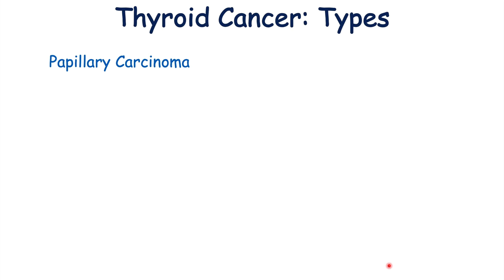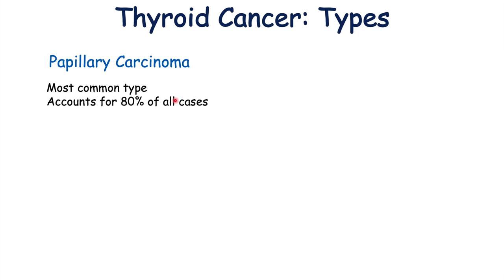The first type is papillary carcinoma, which is actually the most common type of thyroid cancer. Papillary carcinoma accounts for 80% of all cases.